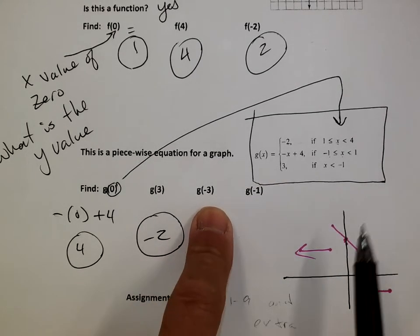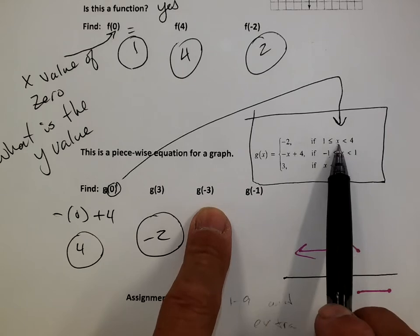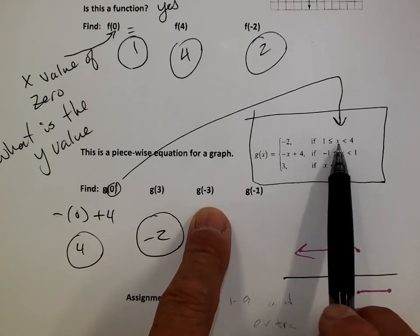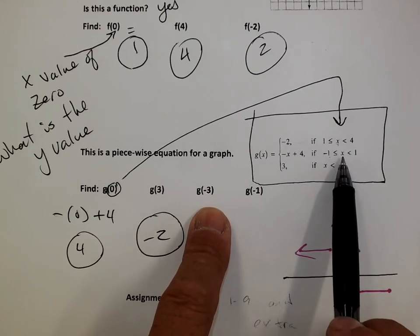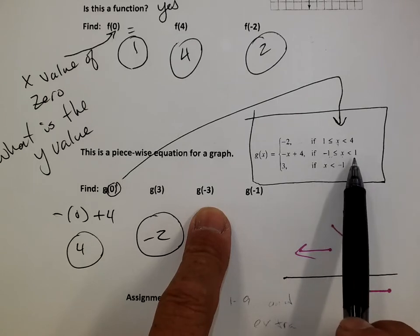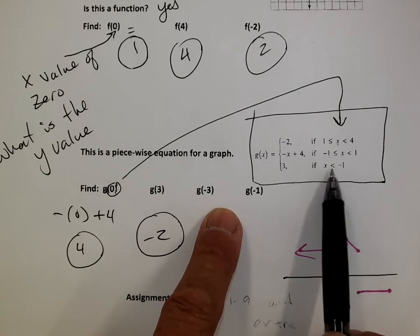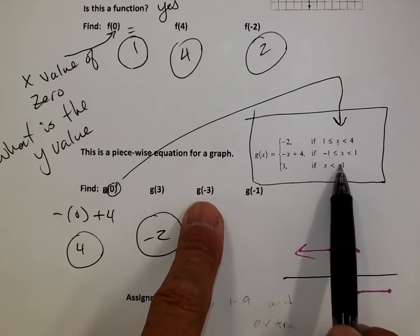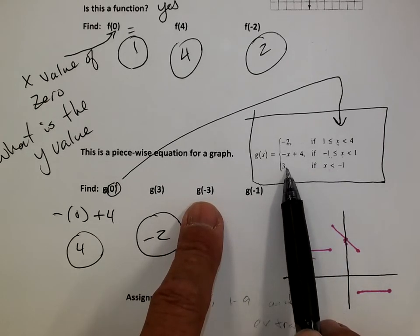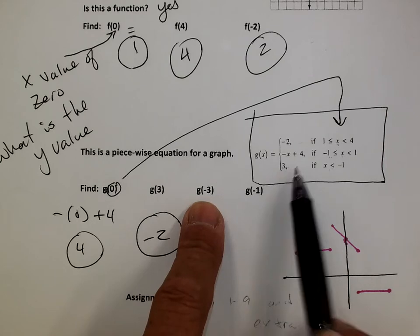G of negative three. Let's see. Is negative three between one and four? No. So don't use that. Is negative three between negative one and one? No. So don't use this. Is negative three less than negative one? Yeah. So negative three's got to go into this equation. So I try and plug it in. But there's no x. Can't plug it into x. So the answer is just three.